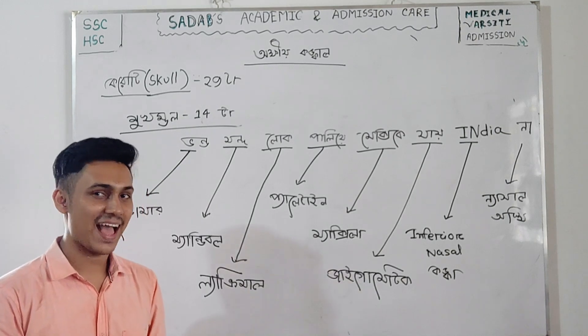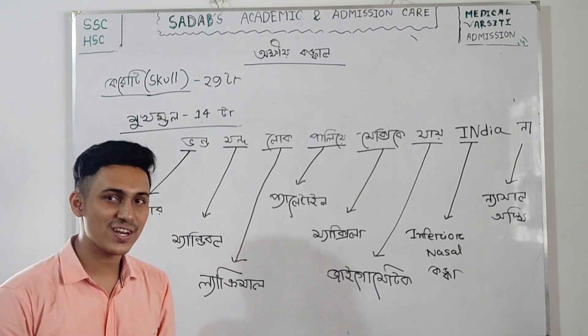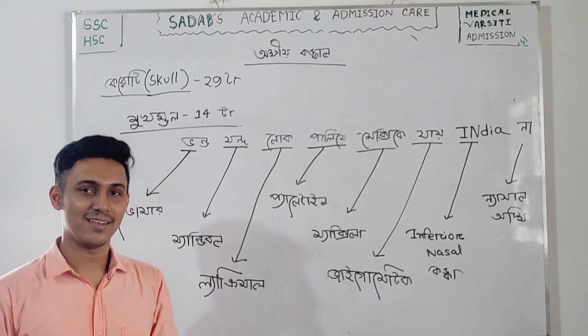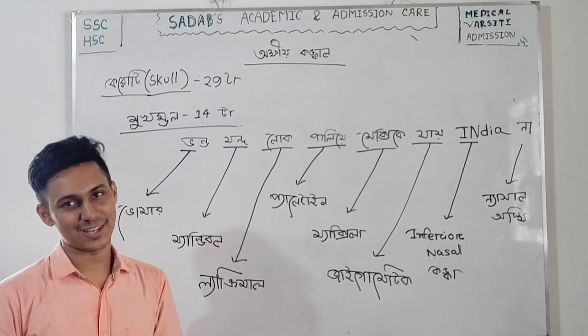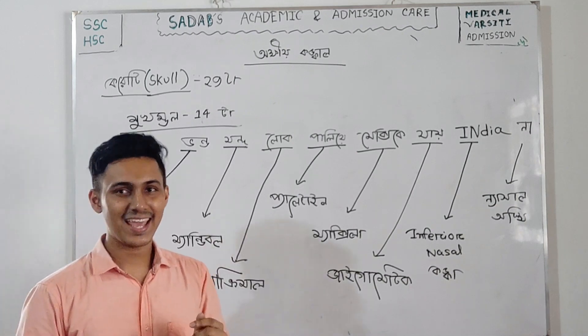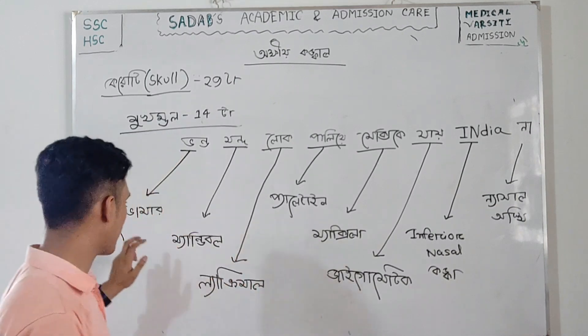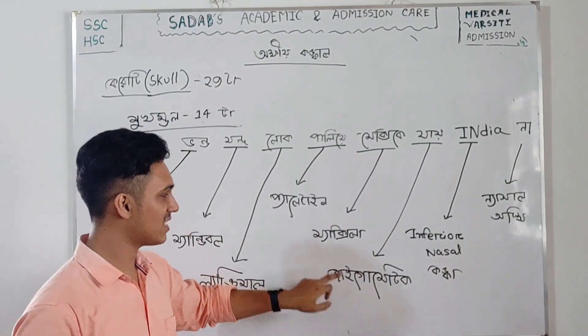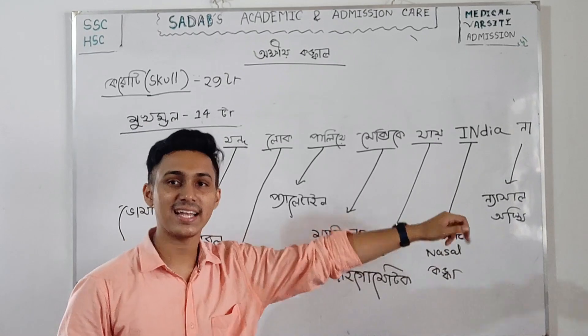I am the inferior nasal concha. How much of this is in India? The count goes: 1, 2, 3, 4, 5, 6, 6, 8, 8.